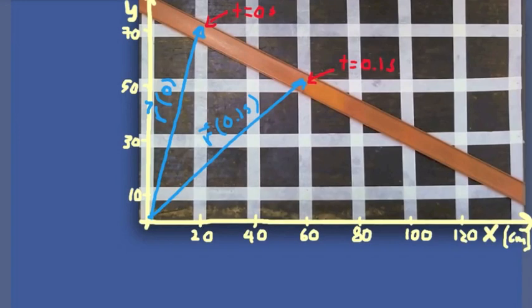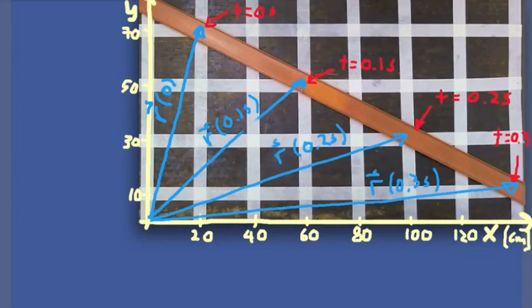If we choose a different time, say 0.1 seconds later, the car is at a different location on the track. We specify that location by drawing a vector from the origin to the car's location at that time — we call that vector r at t equals 0.1 seconds. We can draw a third and fourth vector at different times. These vectors completely specify the position of the car at those times.